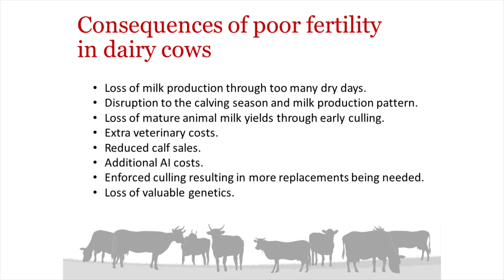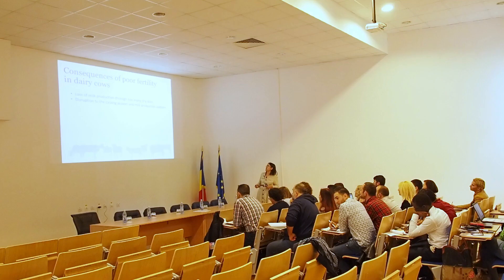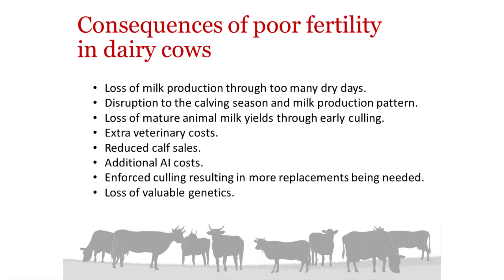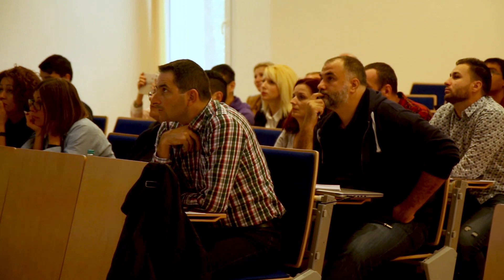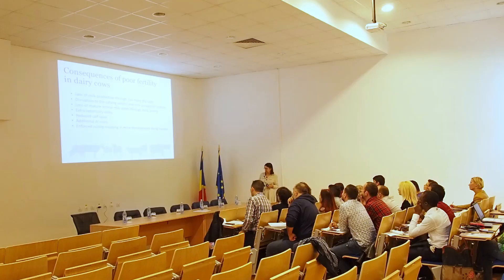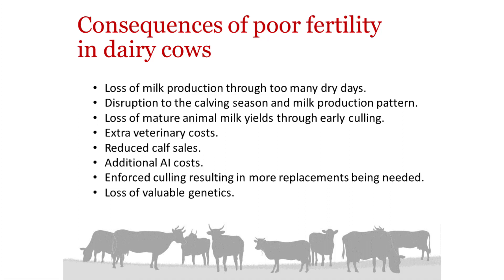In terms of the consequences of poor fertility in dairy cows: we lose milk production, it disrupts the calving season which is very important in seasonally calving herds, and you lose mature animals who produce the most milk. There are extra costs through veterinary expenses, reduced calf sales, additional insemination costs, and more culling is needed. Fertility remains the main reason for culling within dairy herds worldwide, and you also have to produce more replacement animals. Every time an animal is culled, you're potentially losing valuable genetics.